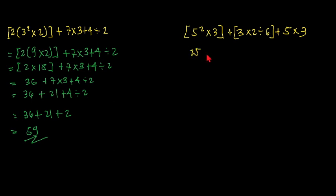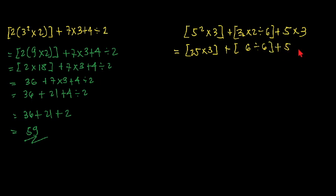So we have 5 squared, that will be 25, times 3. Plus — from left to right, because we have multiplication and division which are of the same order, we look from left to right. The first to appear is multiplication, so we do the multiplication first: 3 times 2, that is 6, divided by 6, plus 5 times 3. So 25 times 3 equals 75, plus 6 divided by 6.